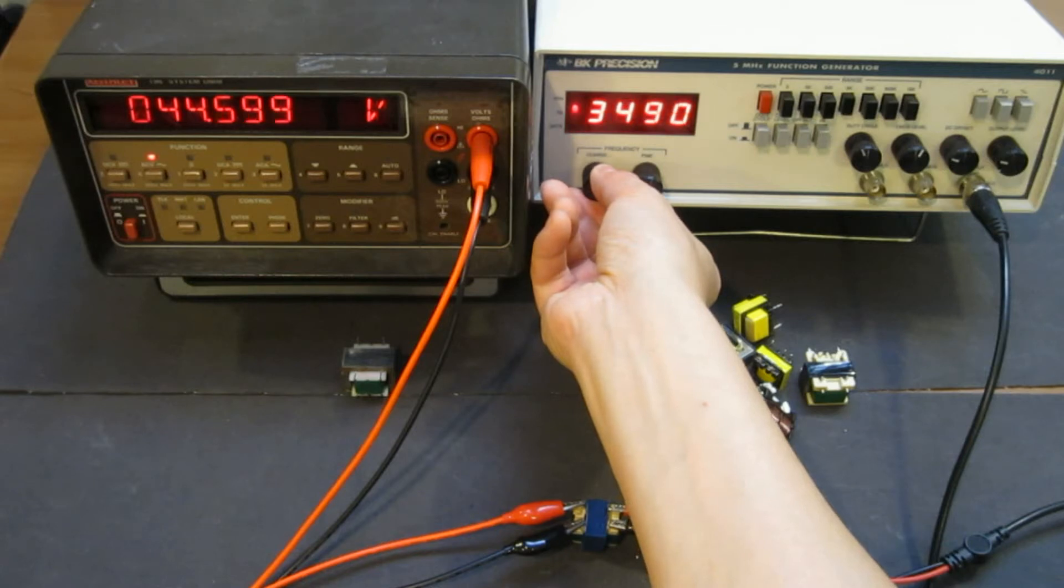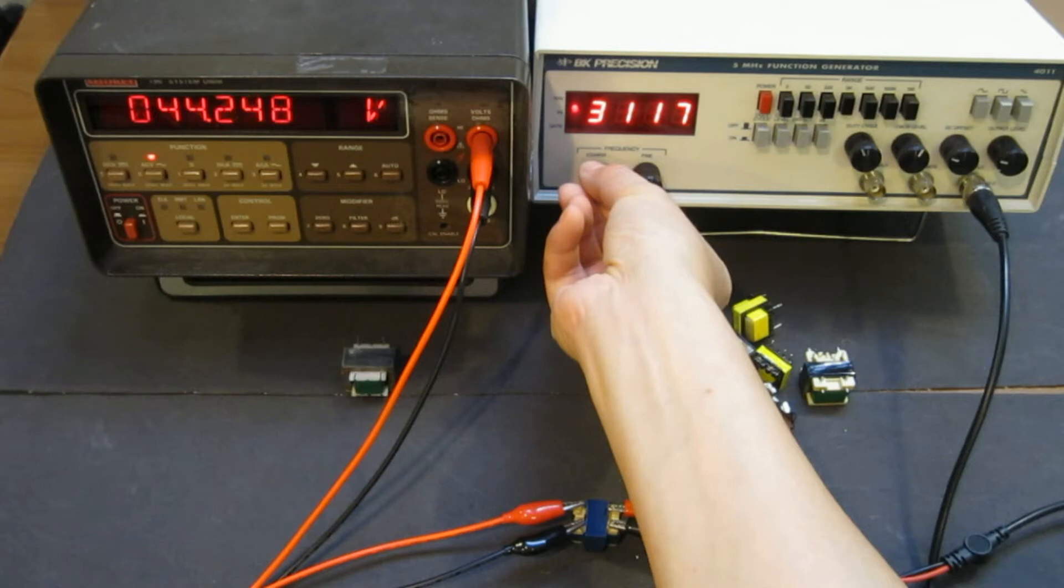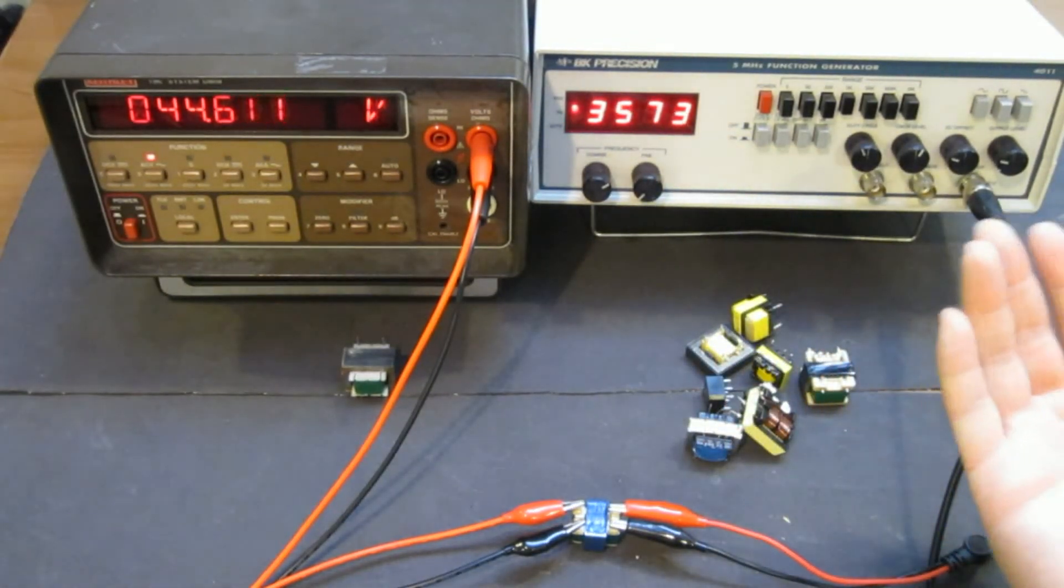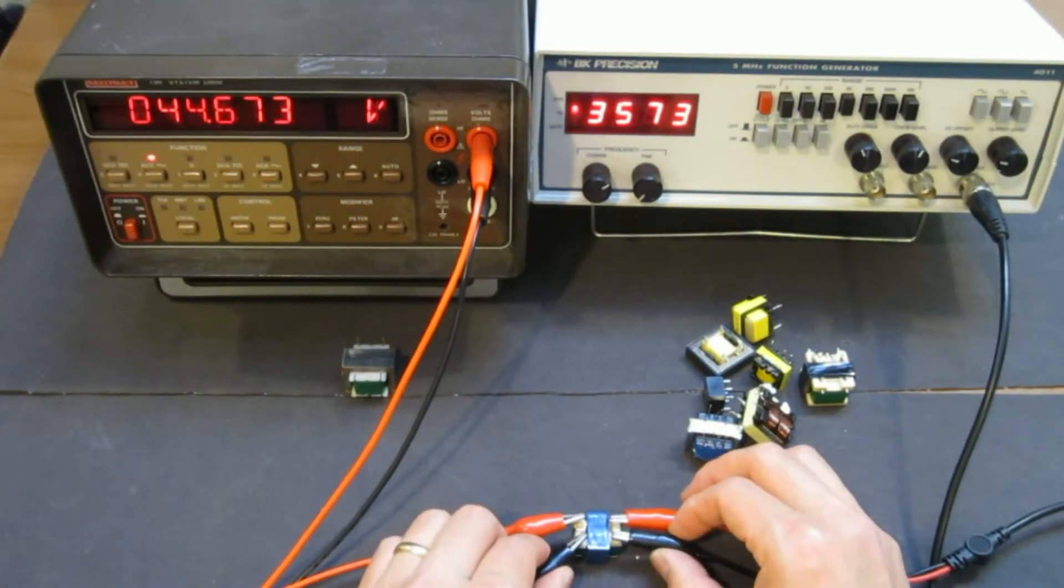So all the way up to 3K, almost 4K, then it started to drop the output. So for this one, you probably would just be running at, let's say, 3 or 4 kilohertz, and it should be pretty good.